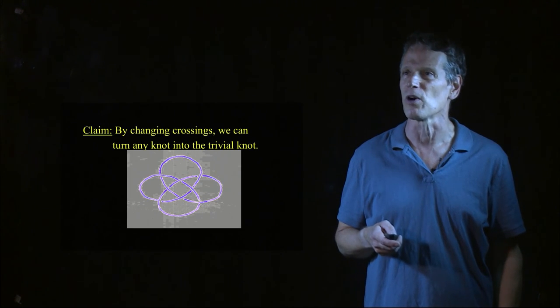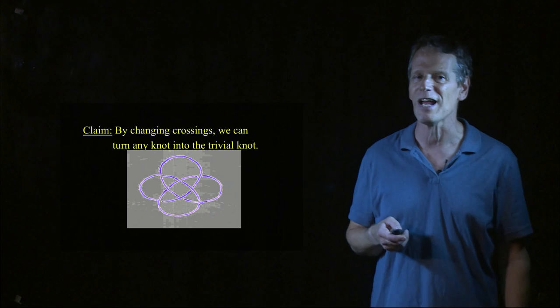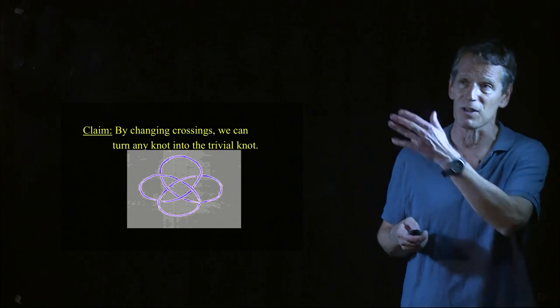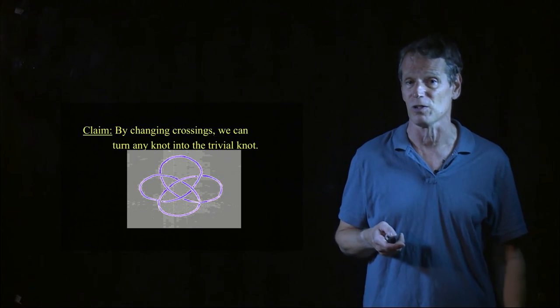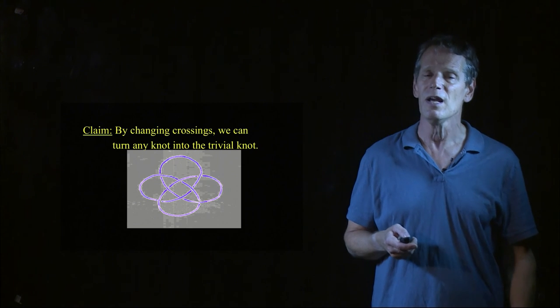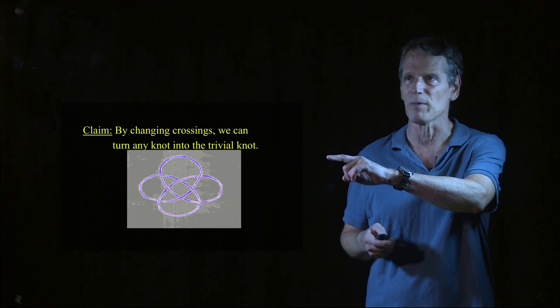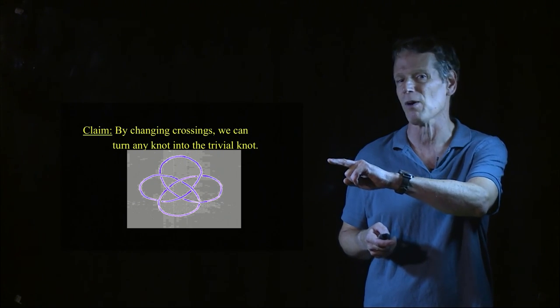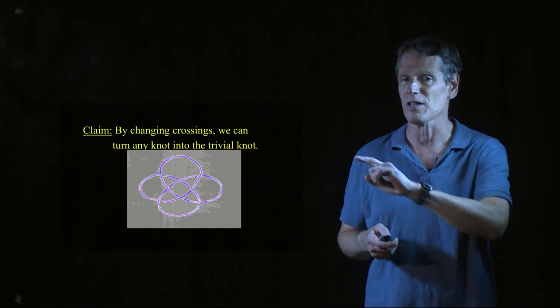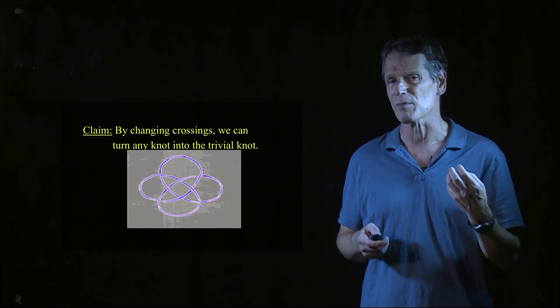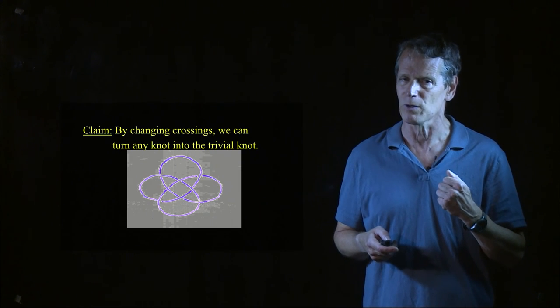So let's see how that works. So the claim is by changing crossings, we can turn any knot into the trivial knot. And really that means any picture of a knot I can turn into a picture of the trivial knot by changing crossings. And we're going to do it on this example right here. And this is going to be an argument that is an argument by roller coaster. I don't know if you've ever been to this roller coaster. There used to be a roller coaster, I think it was at Disney World, but it was in Space Mountain. So it was inside a mountain and you just went down inside the mountain on the roller coaster. And I want you to picture that.